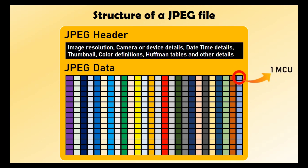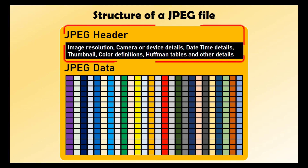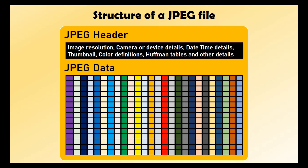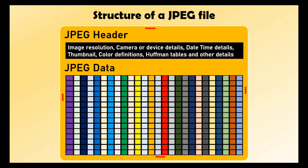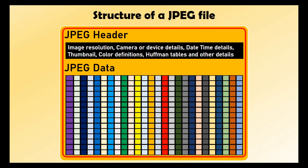If the issue is with the JPEG header, you have a very high chance of repairing your image, especially when you have another working JPEG file preferably captured with the same camera, with the same resolution, orientation, and settings. If the issue is with JPEG data, then your chance of repairing depends on the number of MCUs that are lost or damaged. In some cases the damage could be in both modules — in that case you will need to fix the header first and then try to fix the data.